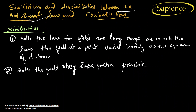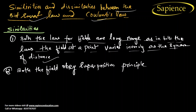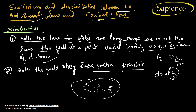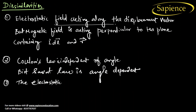Now let us look at similarities and differences between Biot-Savart law and Coulomb's law. Similarity: both laws are long-range — in both, the field at a point varies inversely as the square of the distance. For electric field, F = kq₁q₂/r², and magnetic field is also inversely proportional to r². Both fields obey the superposition principle: F = F₁ + F₂, meaning we can directly add the forces.